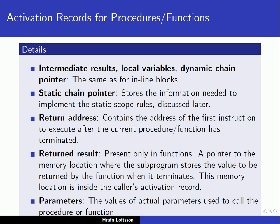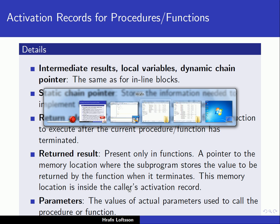Inside the activation records for procedures and functions we have: intermediate results, local variables, and a dynamic chain pointer — the same as for inline blocks. We also have a static chain pointer, which provides the necessary information for implementing static scope rules — something to be discussed later. And we have the return address, which is the address of the first instruction to execute after the current function has terminated.